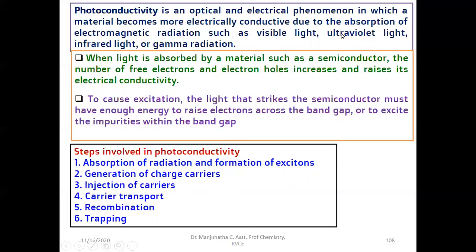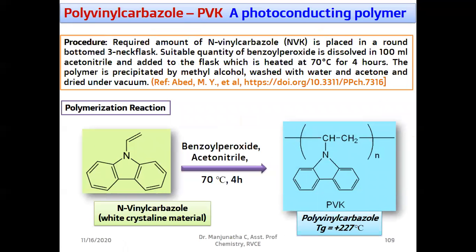Then because of that, there is a formation of excitons. Excitons are the pairs of electrons and holes. Then they are called charge carriers, generation of charge carriers. Next, the injection of charge carriers by adding some dopants also you can create the carriers. Then carrier transport means that material should carry the electrons and holes from one end to another end. Electrons move towards anode and holes move towards cathode. Then at the end, there is a recombination and trapping. These are the steps involved in photoconductivity.